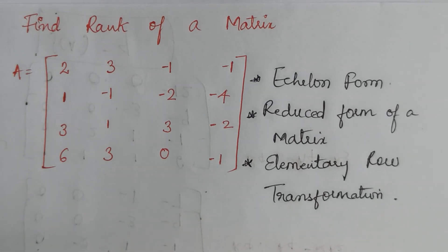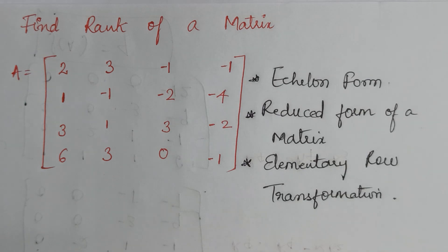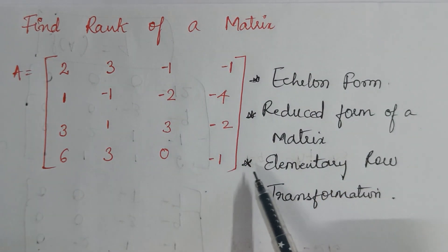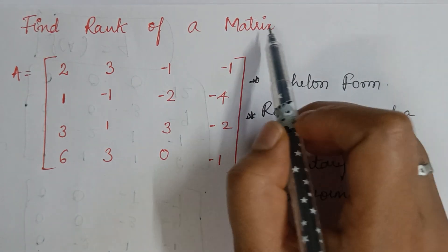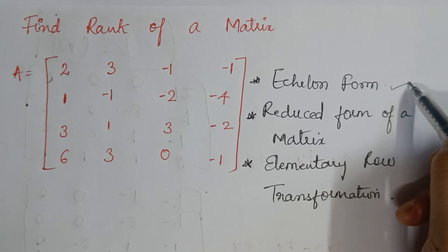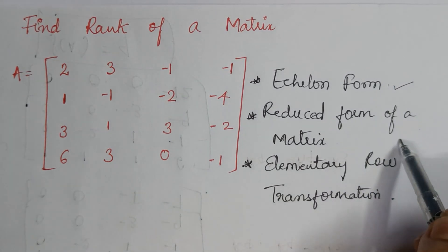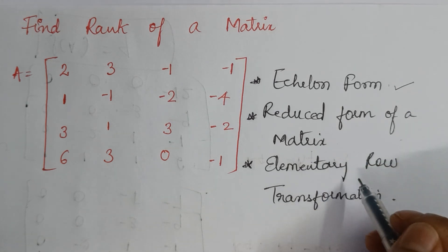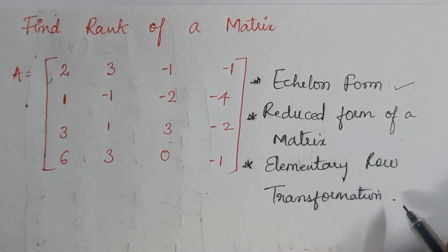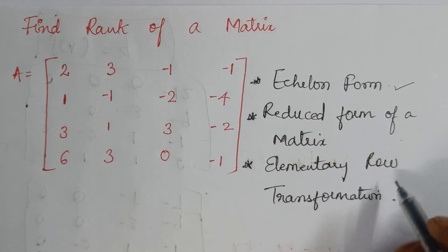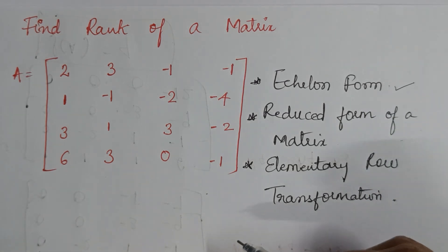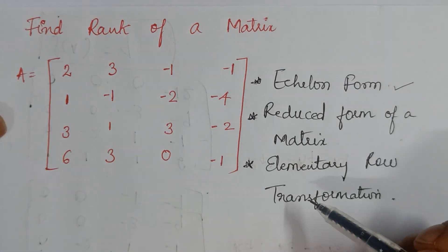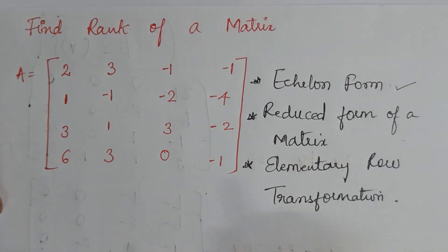Hello everyone, welcome back to my YouTube channel 'Learn with Sumi'. In this video we're going to find the rank of a 4x4 matrix. No specific method is given, so by default we are going to use echelon form, also called reduced form, and we will use row transformations. If you don't know about this in detail, please check my previous videos in the same playlist.